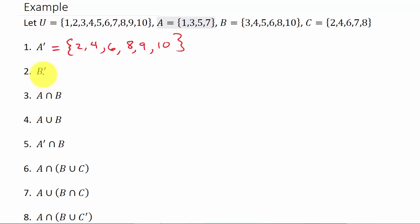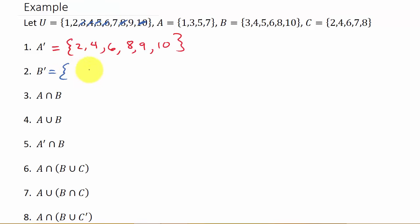Now let's find the complement of B — that's everything in the universal set that's not in set B. So let's see what's in B: three, four, five, six, eight, and ten. So everything in the universal set that's not in B would be one, two, seven, and nine. And so that's the complement of B.